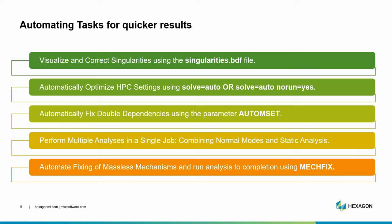We can establish dependencies using AutoMSET, and we can perform multiple analyses in a single job — combining normal modes analysis and static analysis within the same run so you don't have to do two separate runs, expediting time to market. We also have two robust mechanisms for automatically fixing massless mechanisms in any model to run the analysis to completion. As engineers, we have to use this capability responsibly to ensure we don't ignore modeling errors in our models.